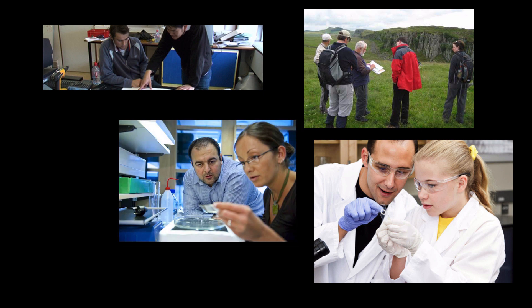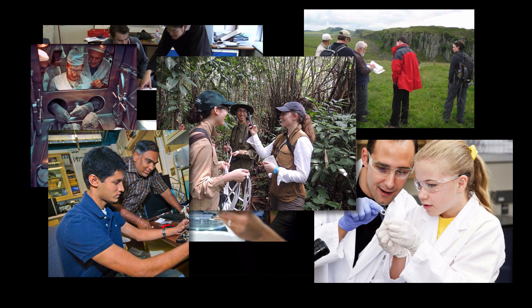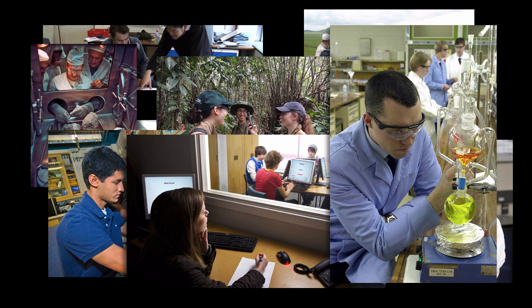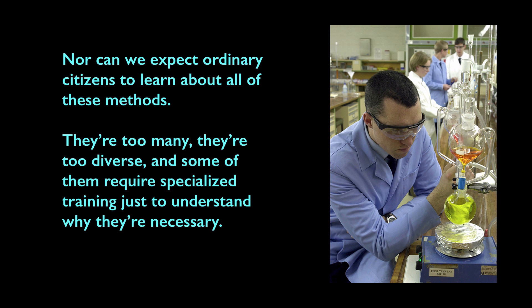These protocols for minimizing error — these methods for doing science — will vary from field to field, and there are a lot of them. The closer you zoom in on any particular field, the more of them you see. Part of the reason why it takes a long time to train scientists to do research in a given field is that these methods require understanding and experience and skill to apply properly. At this level, it's like learning a skilled trade or craft — you need to be mentored into the field over a period of time to acquire the skill and judgment to use them effectively. So we can't expect physicists to learn the protocols for doing field studies in ecology or survey methods in the social sciences, nor can we expect ordinary citizens to learn about all these methods. There are too many, they're too diverse, and some of them require specialized training just to understand why they're necessary.